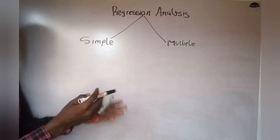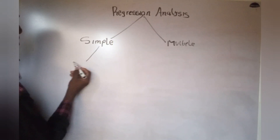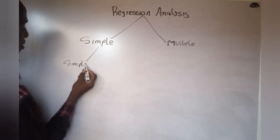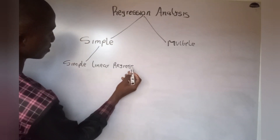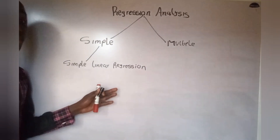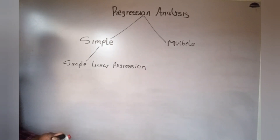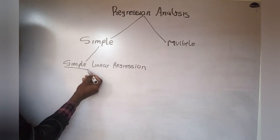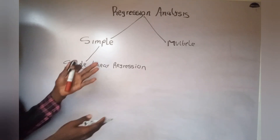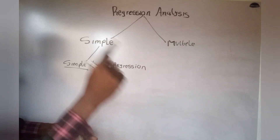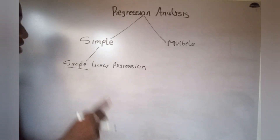Before moving to the calculation aspect, I want to explain this concept. When you talk about simple linear regression, it helps us to determine the relationship between two variables — that is why it is called simple. It involves no more than two variables: one dependent variable and one independent variable.